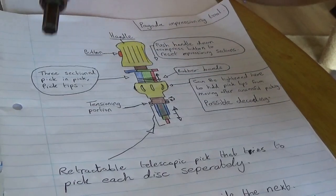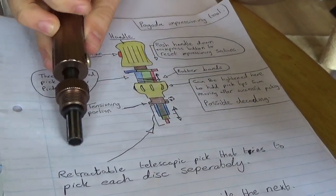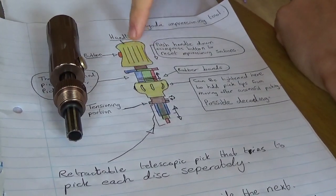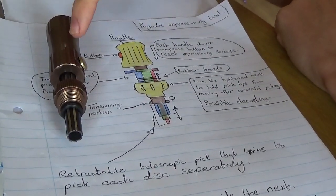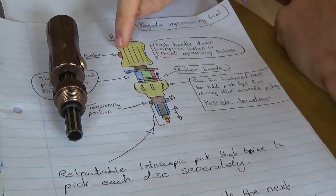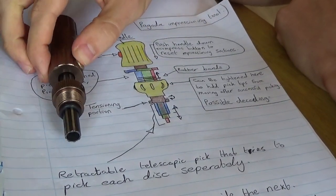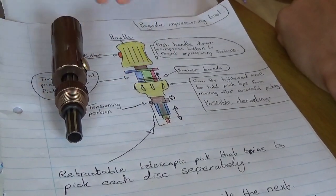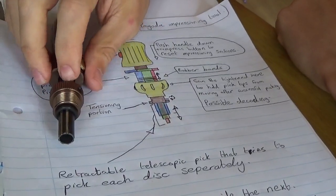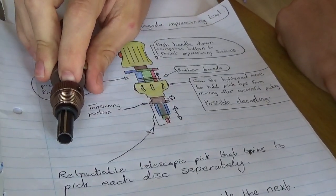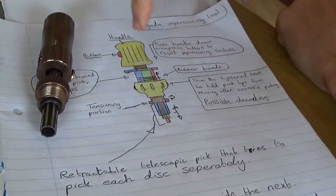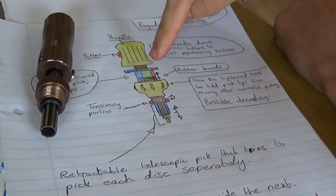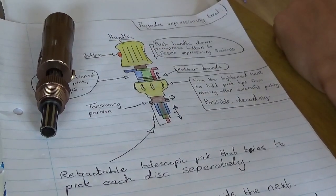Let's compare it to this just so we can see what the differences are. You have your handle first of all. Now the handle, there's the button you see there, push the button to allow that to slide up and reset all the pick tips. This one, my design, actually only has three pick tips because there are only three discs inside these locks.